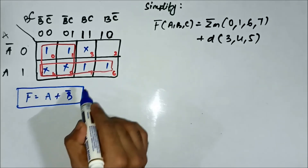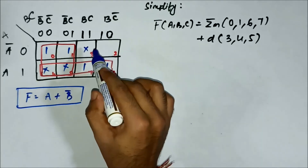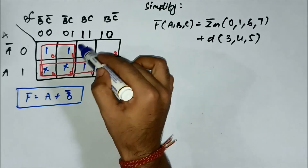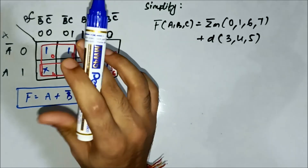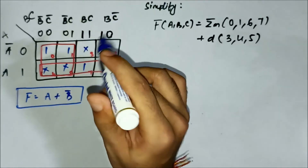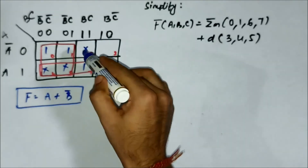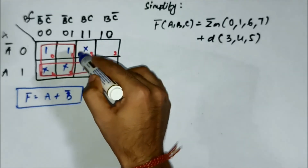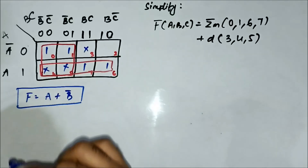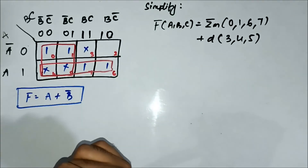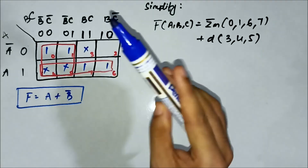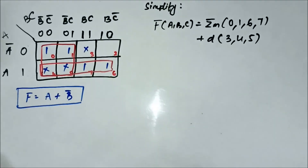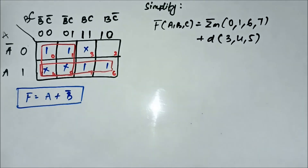I hope you understand the point related to the left-out X-marked cell — there is no need to form an extra group to include it. This concludes the third question.